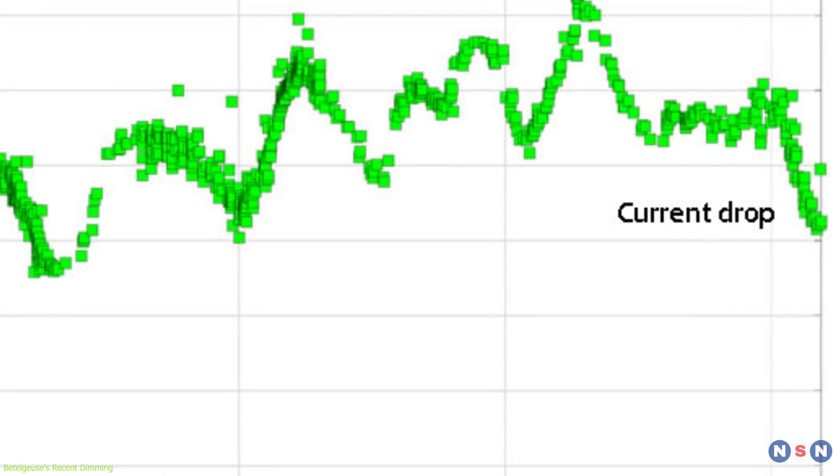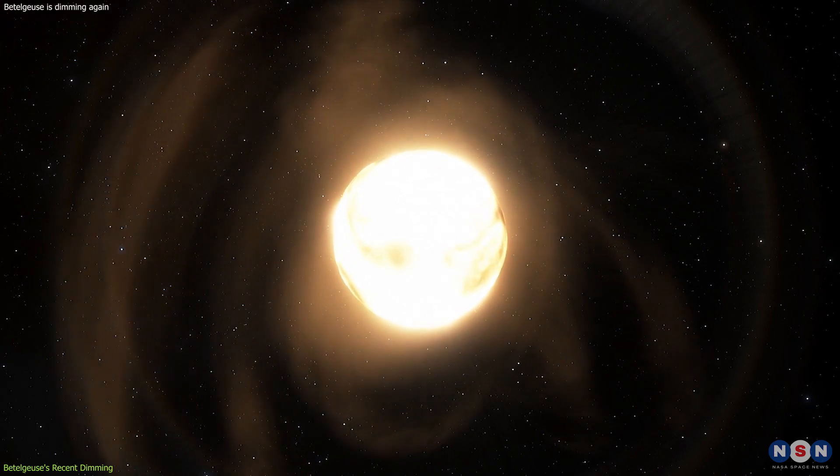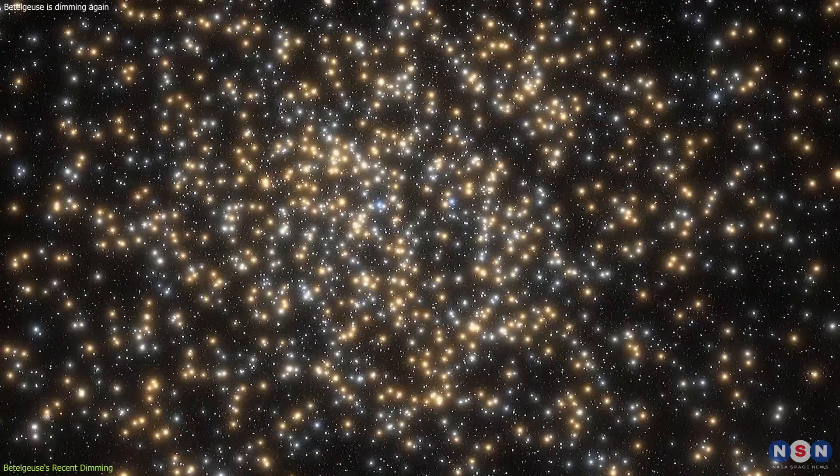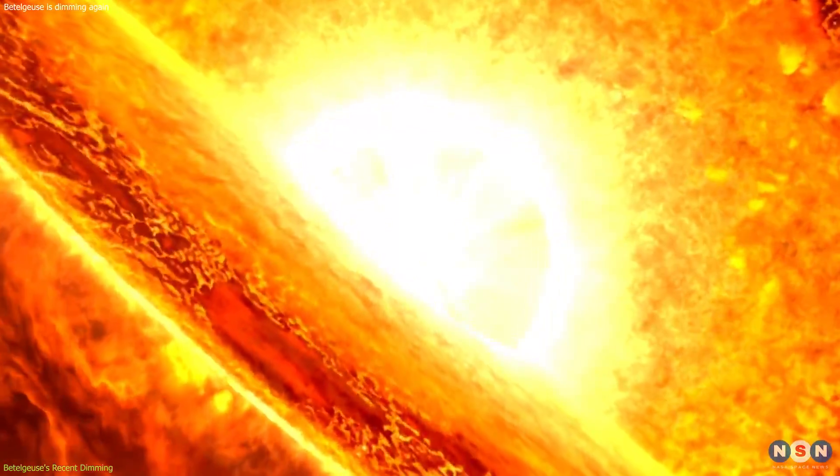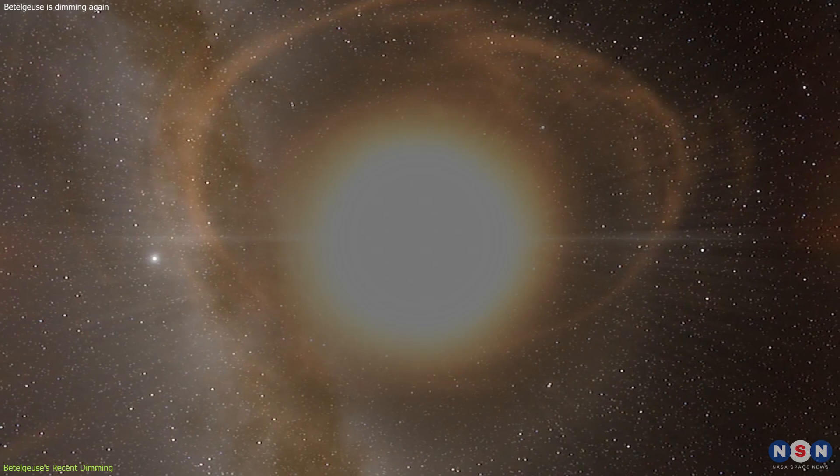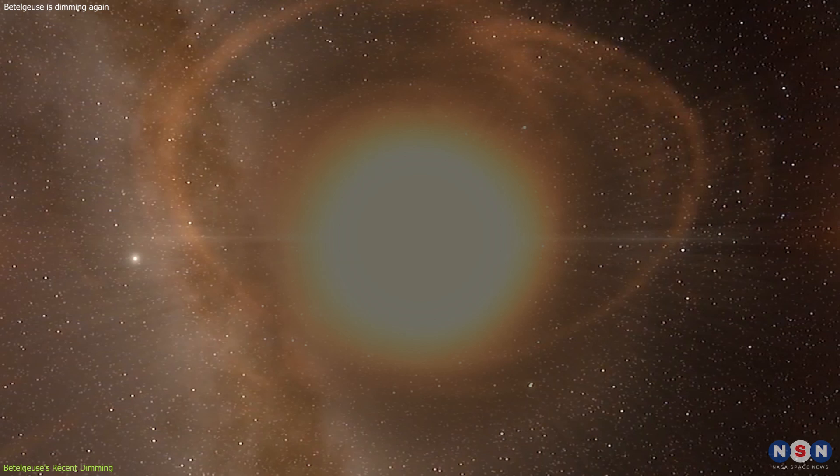This dimming is not just a matter of academic interest. It has practical implications for our understanding of stellar evolution. Red supergiants like Betelgeuse are in the later stages of their life cycle, having exhausted the hydrogen in their cores and moved on to fusing heavier elements. The dimming could be a sign of significant changes occurring within the star, potentially heralding its transition to the next stage of its evolution.